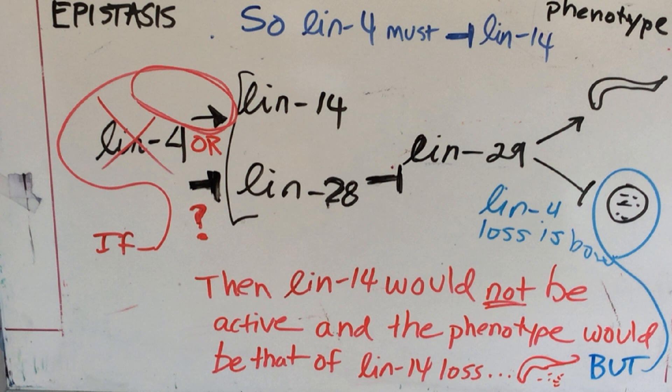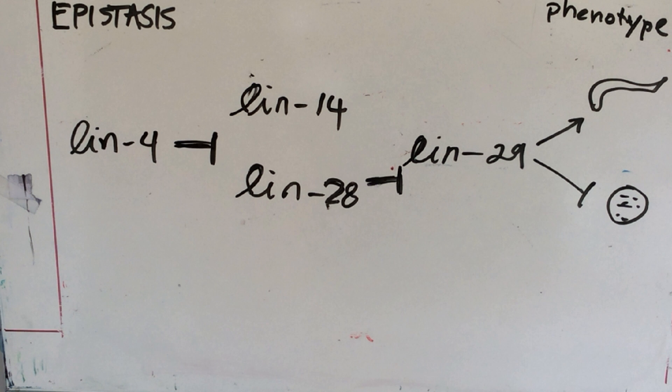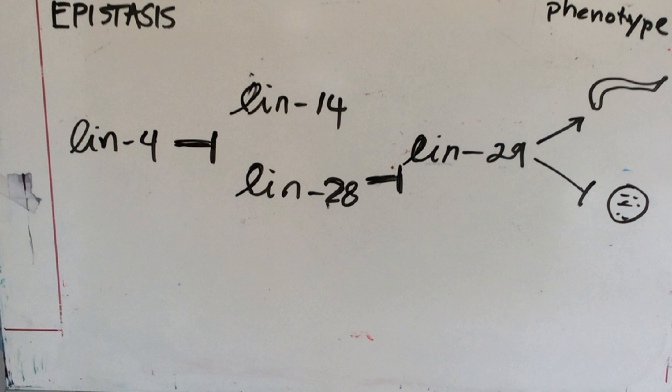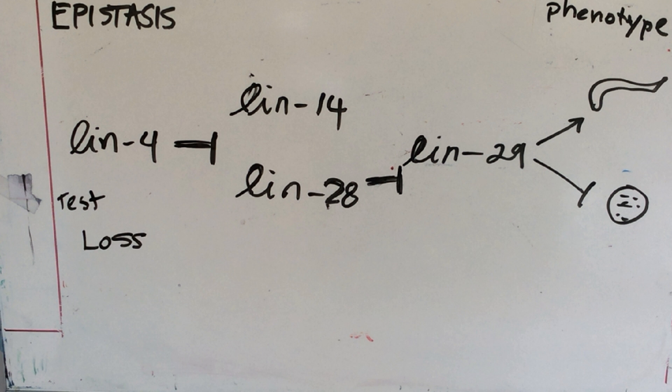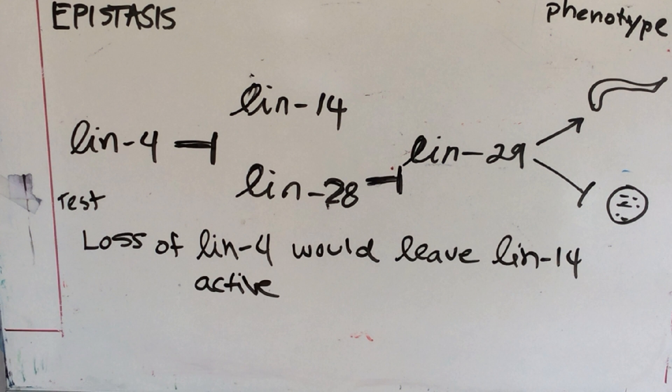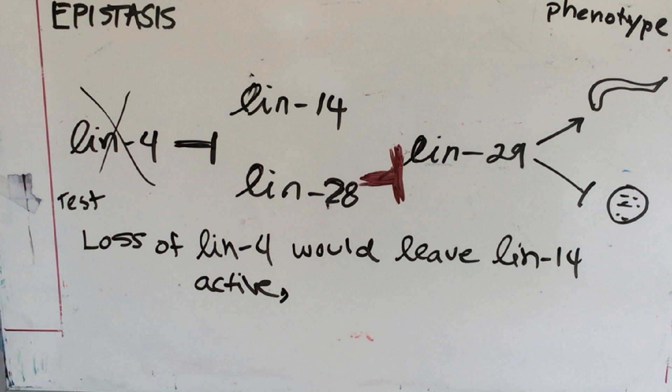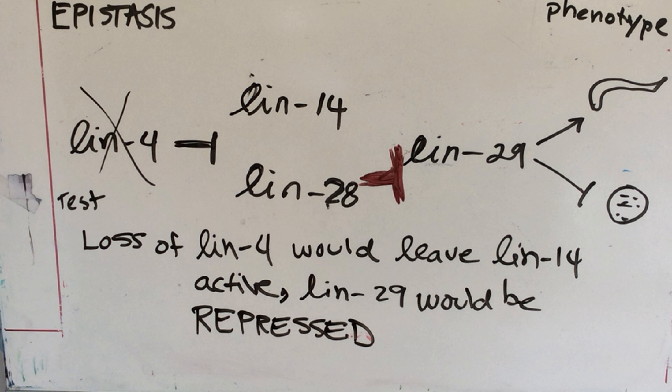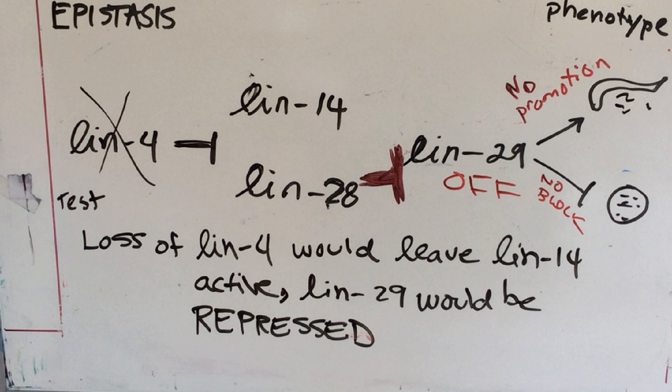But we know that the loss of LIN-4 gives you a bag of worms phenotype, which is not the loss of LIN-14 or 28. Thus, we think that LIN-4 might be repressing LIN-14 and 28. So, loss of LIN-4 would leave LIN-14 and 28 active. LIN-29 would be repressed. There would be no promotion of the wild type or repression of the bag of worms. And the phenotype would be bag of worms.